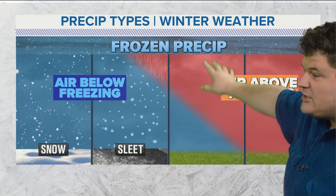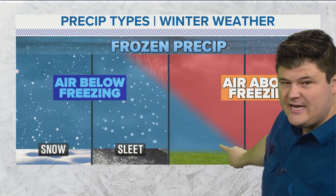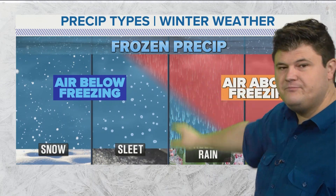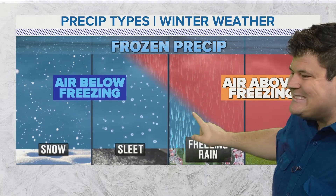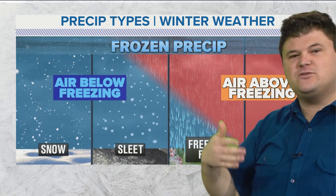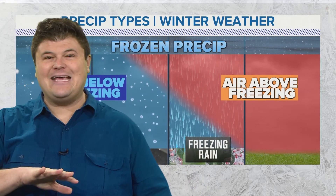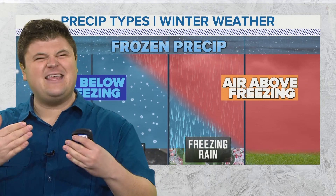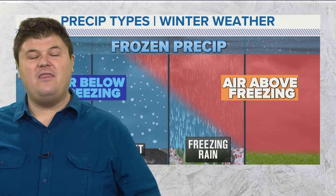Sleet doesn't necessarily stick to things and can cause slick conditions, but it's not quite as dangerous as freezing rain. In a freezing rain profile, you have much more warm air aloft and a very shallow area of sub-freezing air near the surface. Frozen precipitation falls into the above-freezing air, melts into raindrops, and continues falling. It does not have enough time in that very shallow area to refreeze into a sleet pellet, so it hits the surface as rain. But the surface is below freezing, so those super-cooled water droplets glaze onto everything — power lines, trees, roads. It can cause power outages; power lines will sag. It's the stuff that encases everything in ice — trees sagging over, power lines sagging down. That's the stuff we want to avoid.